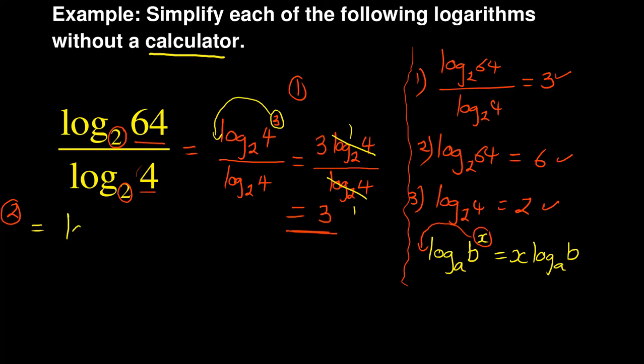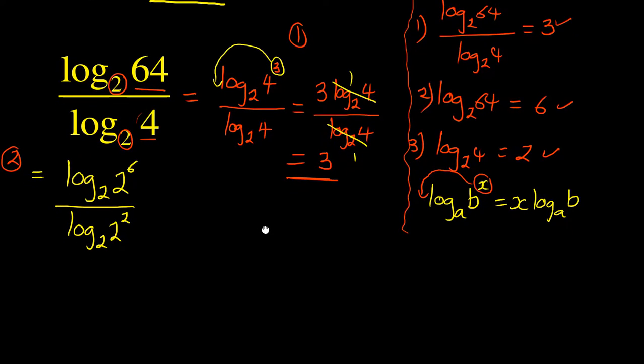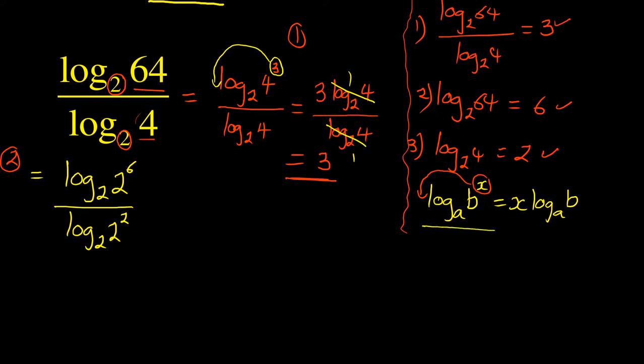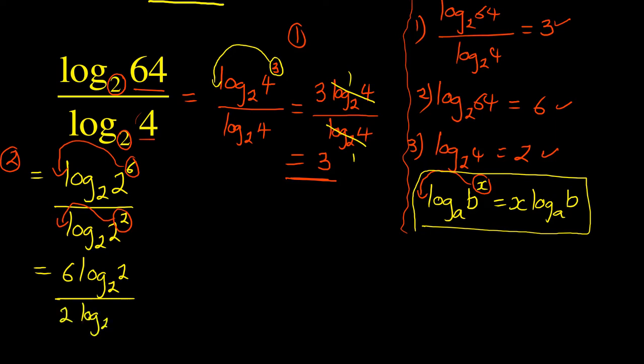So in this case, this is equal to log base 2 of 2 to the power of 6 over log base 2 of 2 to the power of 2. Again, what you are going to be using is the same law of logarithms, whereby the power is dropping. So you take this 6, drop it, take this 2, drop it. We have got 6 log base 2 of 2 over 2 log base 2 of 2.